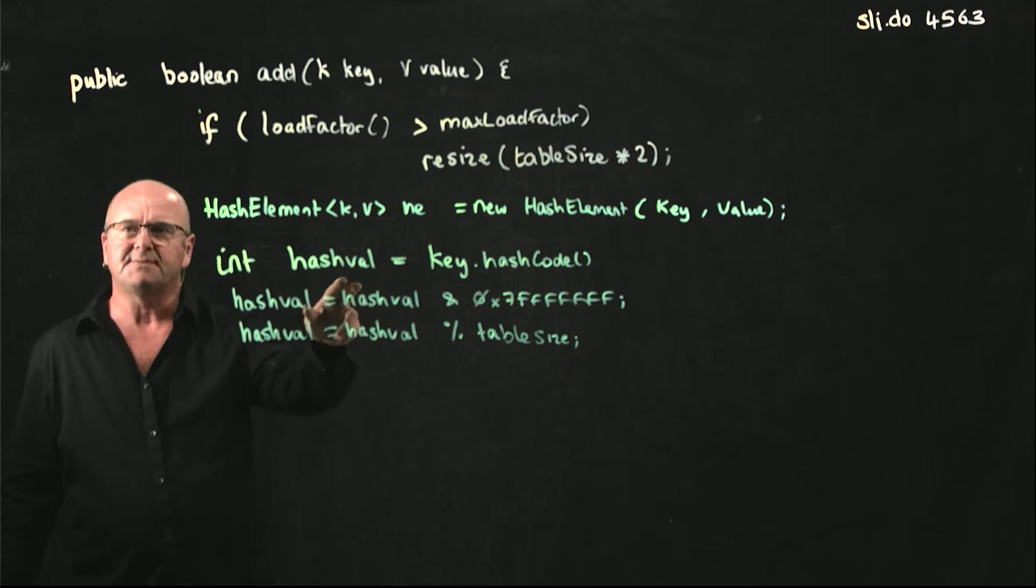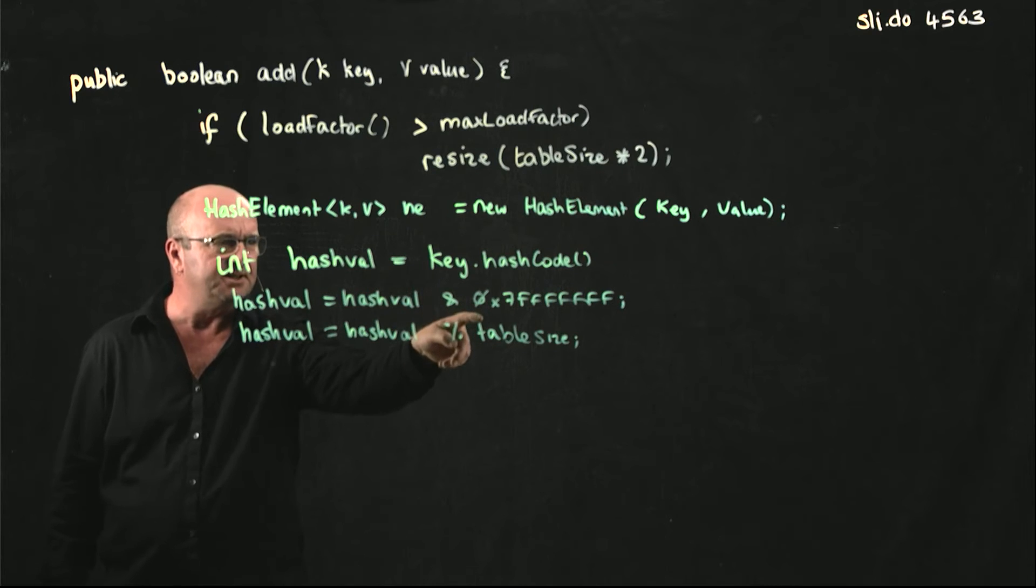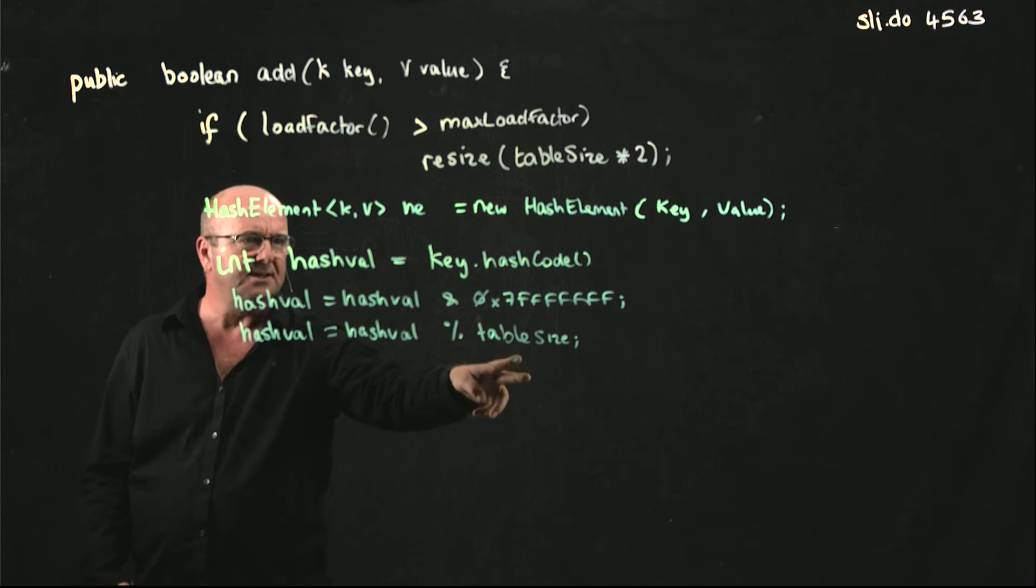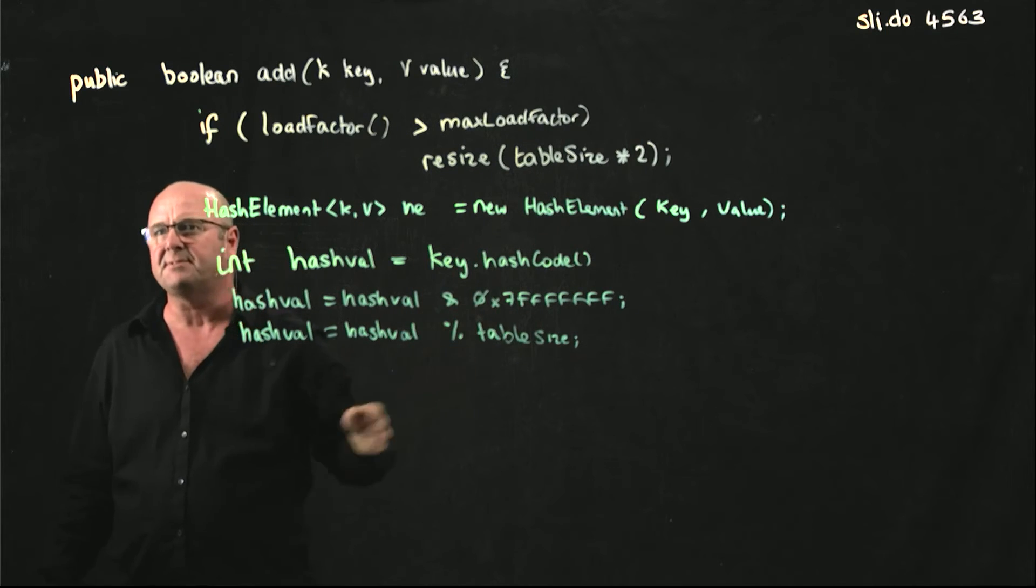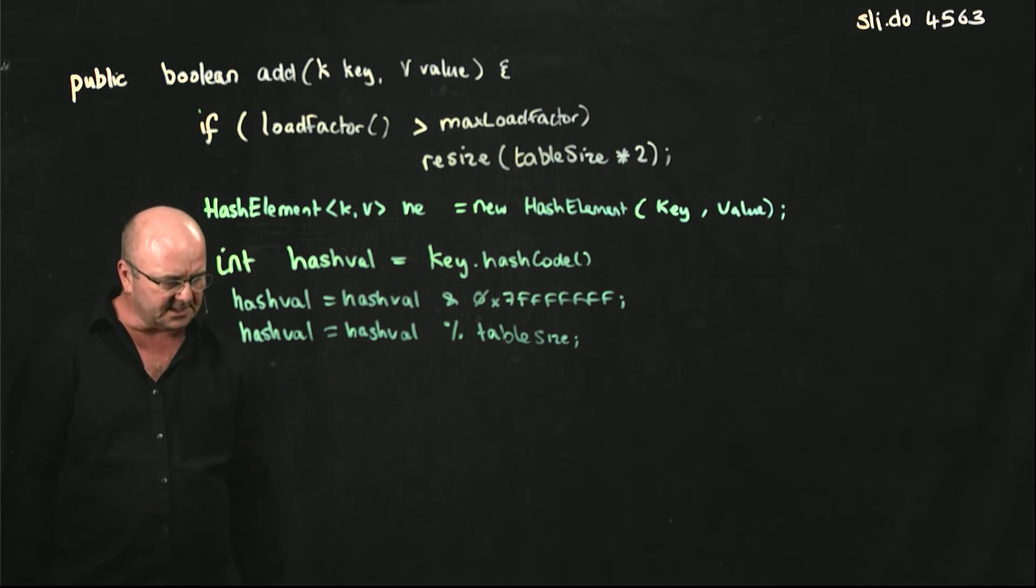And that's the index of the array that we're going to use to add our element to our linked list. So we get our hash value, we get our hash code from our key, we make it positive because it's an integer, it could be negative, we just set the first bit to 0. We don't care that that could potentially make it a huge number, because the next thing we do is mod it on the table size. As long as we always do the same three steps, it doesn't matter what we did to the int.